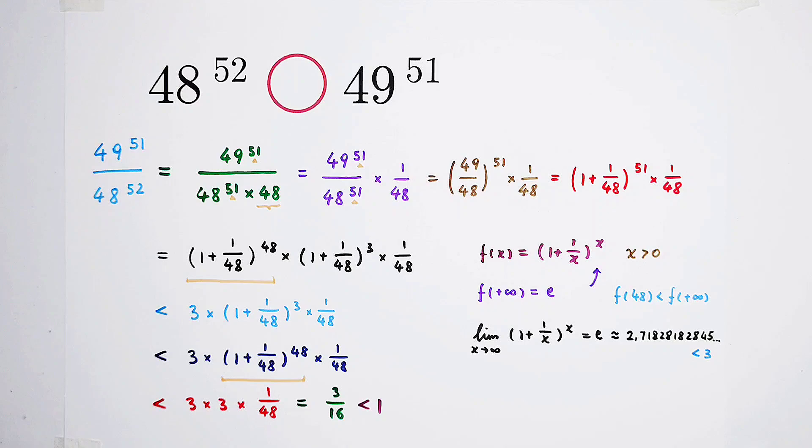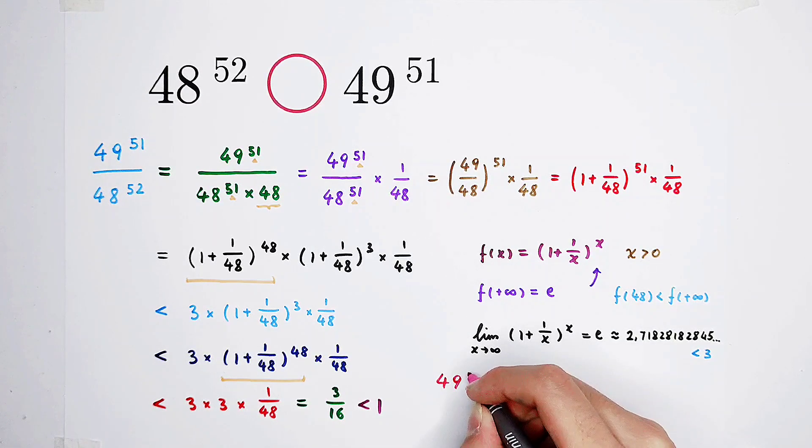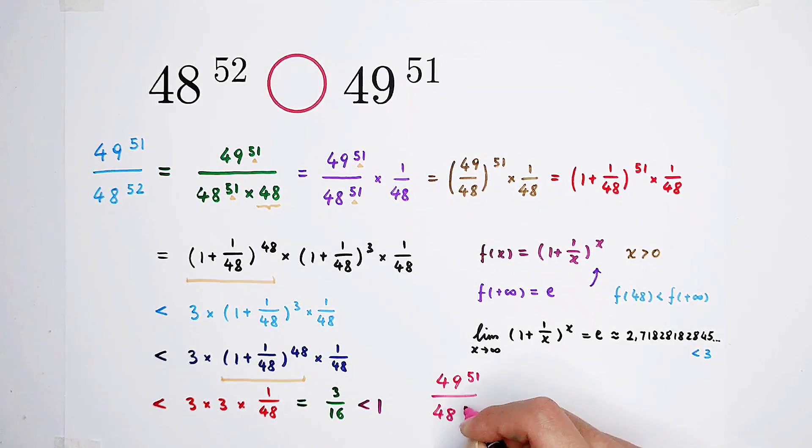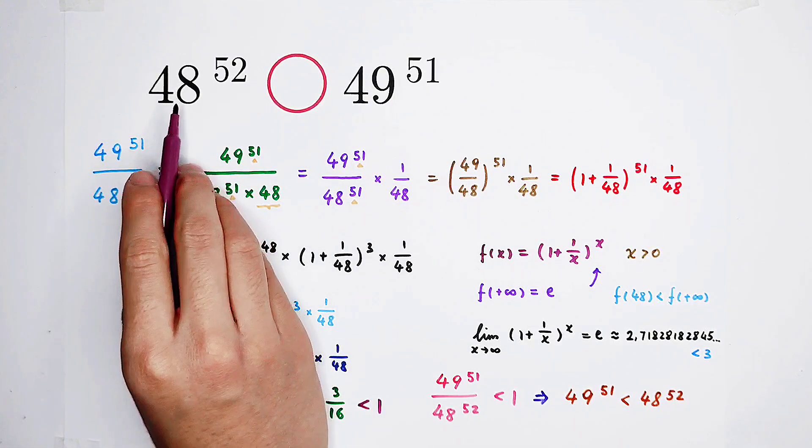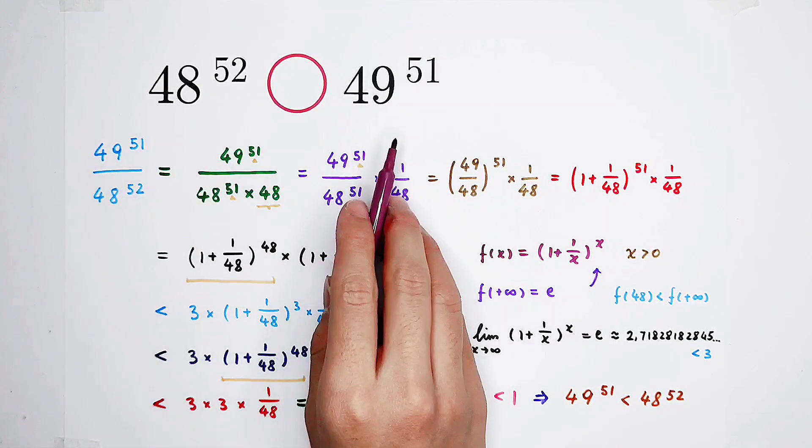So we've got the ratio of these two numbers. It's smaller than 1. Okay, from this result, we can get 49 to the power of 51 is smaller than 48 to the power of 52. So that means the left hand side is much, much bigger than the right hand side.